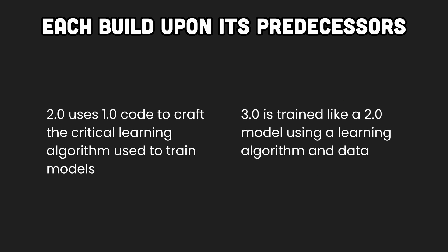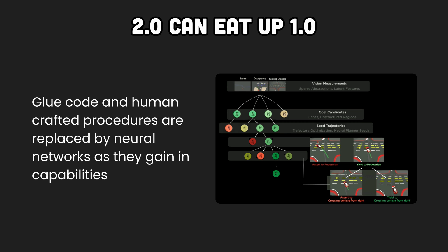It's interesting to notice how each software stage builds upon its predecessors. We use 1.0 code to describe the critical learning algorithm used to train 2.0 neural network weights. 3.0 uses a training algorithm described with 1.0 code, but also neural network weights from 2.0 to interpret and run programs represented as natural language prompts. Andrzej shares an anecdote from Tesla where 2.0 ate up 1.0 code as neural networks increased in capabilities — lots of glue code and human-handcrafted procedures were absorbed by the neural networks themselves as they gained in performance.